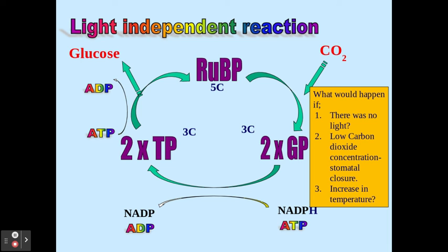The last factor is temperature, which can impact again on carbon fixation. There's an enzyme involved here called rubisco. If temperature increases, rubisco will perform at a much higher level — I'm going to get more kinetic energy, more enzyme-substrate complexes, and more GP formed. Equally, if temperature decreases, I'll get a decrease in GP formed. That's a big synoptic link back to enzymes.